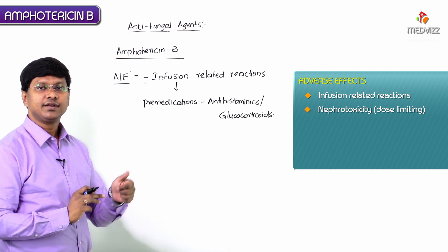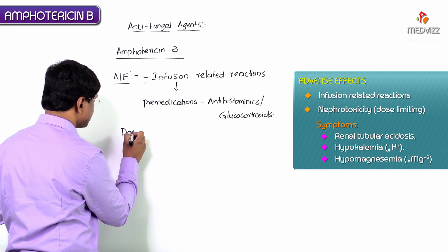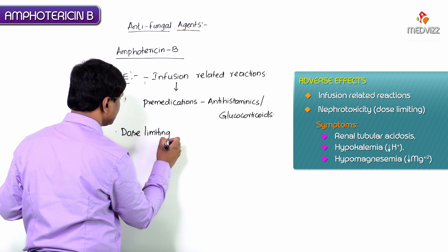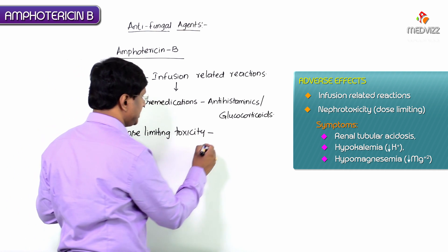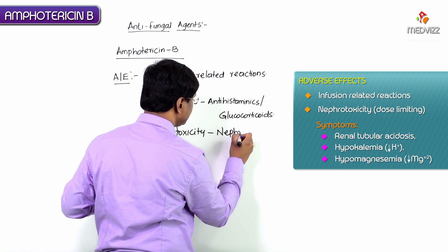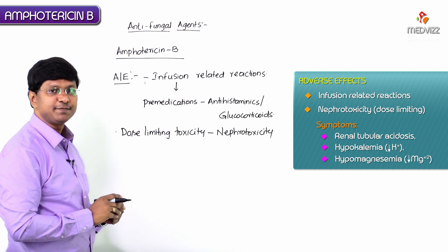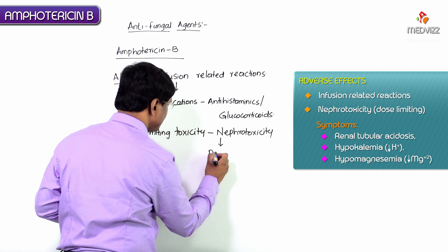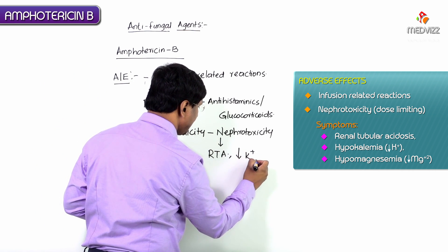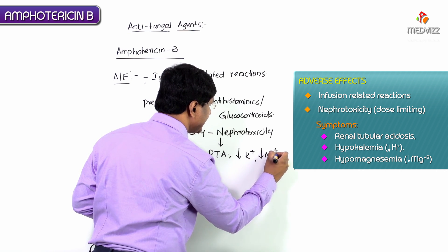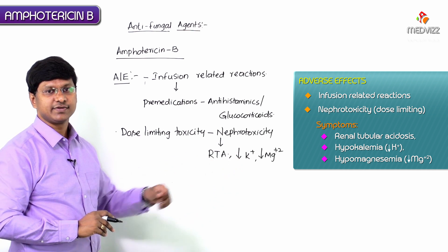The dose-limiting toxicity of amphotericin B is nephrotoxicity, which is manifested by renal tubular acidosis, hypokalemia, and hypomagnesemia.